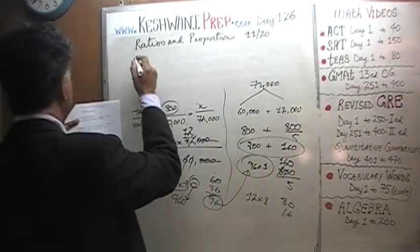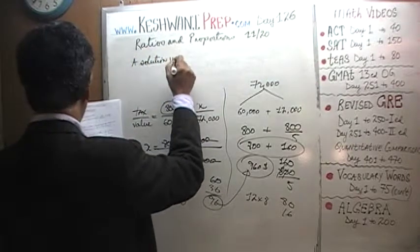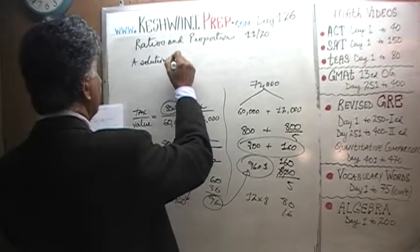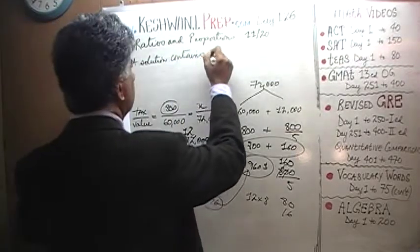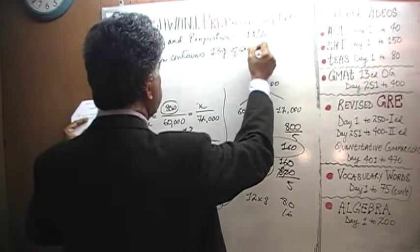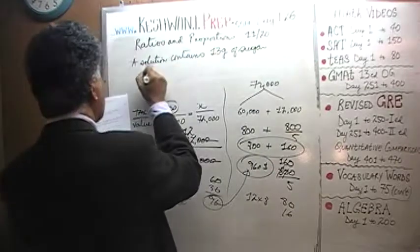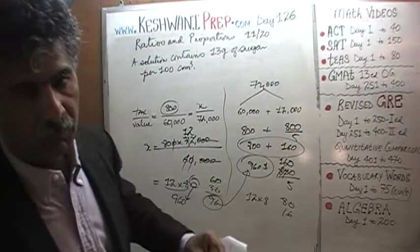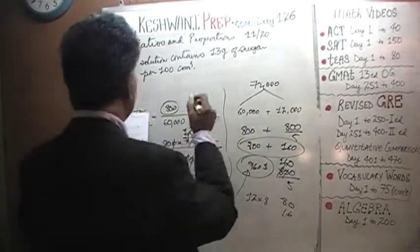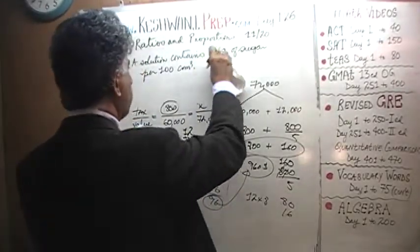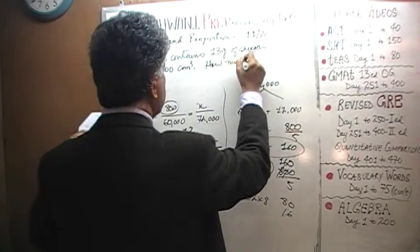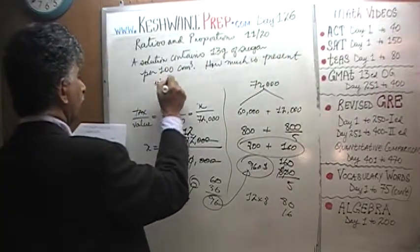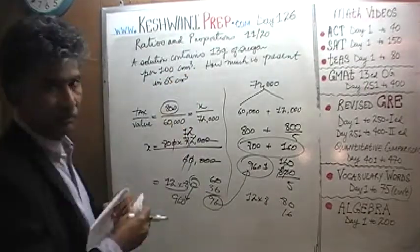Here's the problem: we are told that a solution contains 13 grams of sugar per 100 cubic centimeters. Question is, how much sugar is present in 65 cubic centimeters?